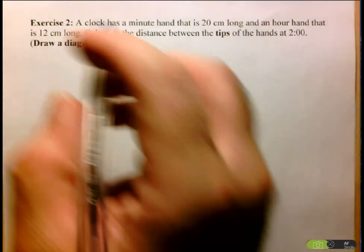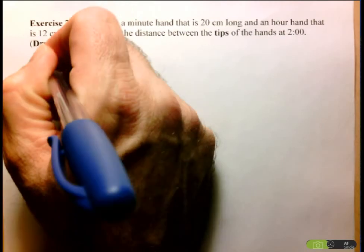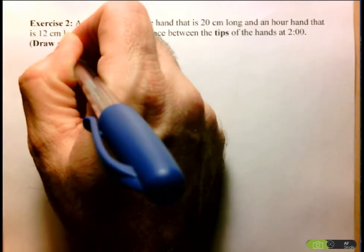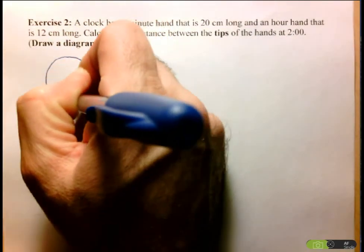So first of all, we should draw ourselves a diagram. We know that we've got the hands in a clock go around in a circle.